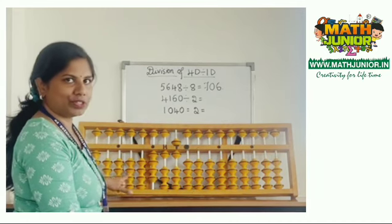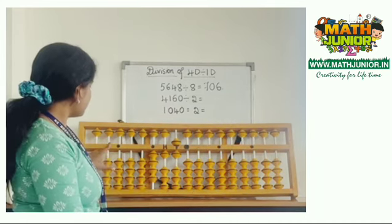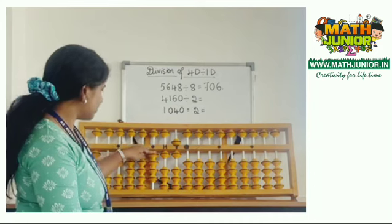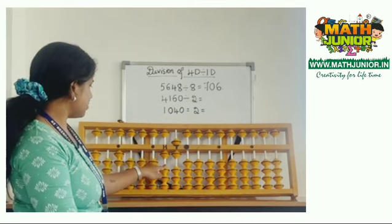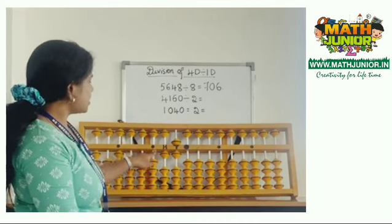Now compare 4 with 2. So you can divide. 2 times 2 is 4. Remove 4. Then I'm left with 01. 2 times 0 is 0.